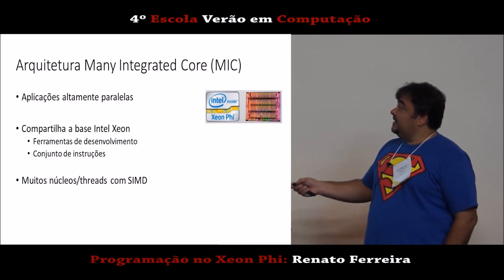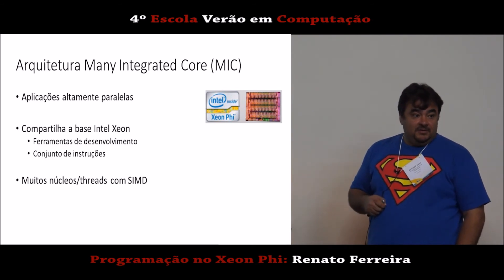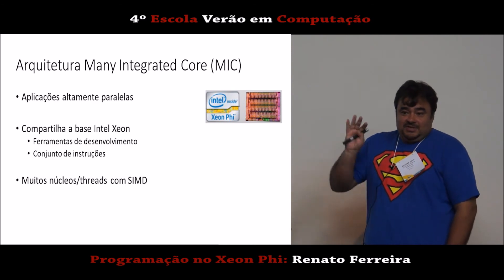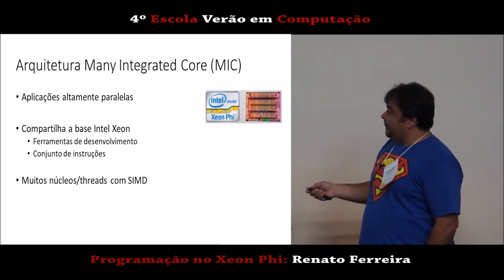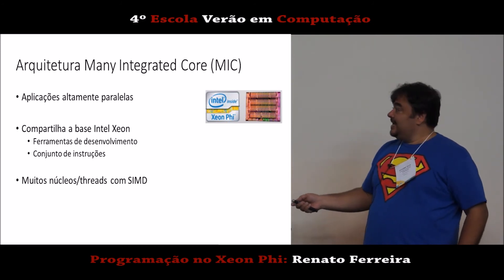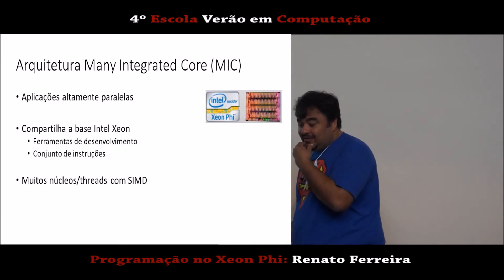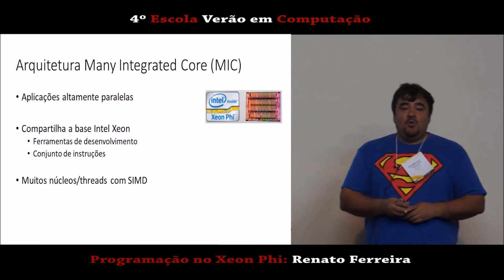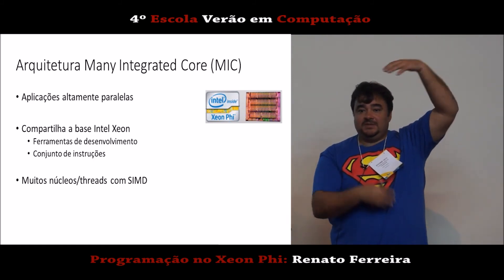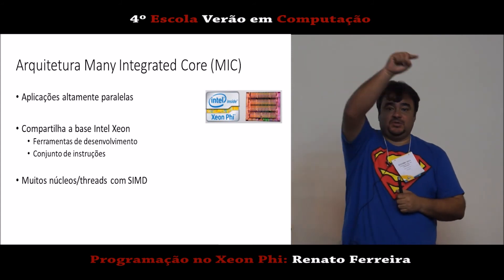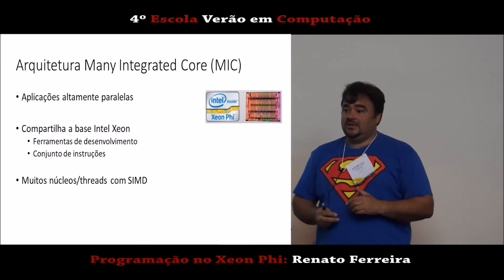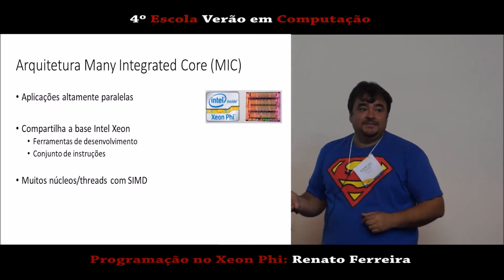As ferramentas são basicamente as mesmas. Isso a Intel usa como propaganda: por que o Xeon Phi é melhor do que GPU. Hoje a gente programa em C para os dois — tanto faz o que está por baixo, no fim das contas a gente vai programar em C. A ideia do Xeon Phi é ter muitos núcleos, muito mais do que uma dúzia, muitas threads, e cada thread ser uma thread SIMD — uma thread vetorial. Isso significa que no lugar de fazer A = B + C para escalares, você opera sobre arrays inteiros numa única execução.